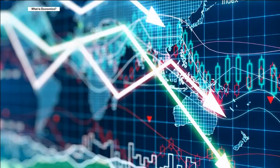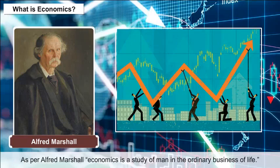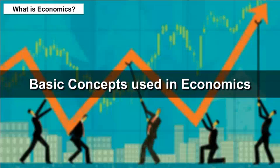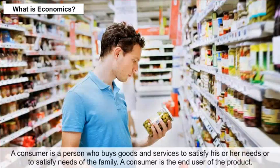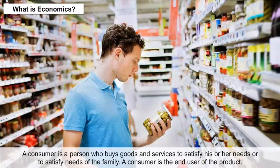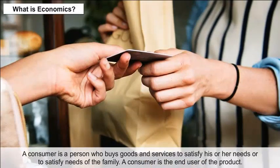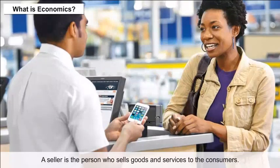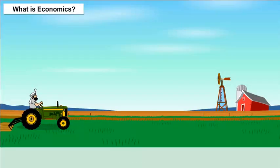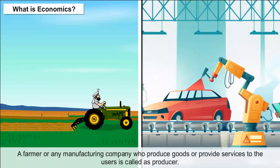Introduction: What is economics? As per Alfred Marshall, economics is a study of man in the ordinary business of life. Basic concepts used in economics: A consumer is a person who buys goods and services to satisfy his or her needs, or to satisfy needs of the family — a consumer is the end user of the product. A seller is the person who sells goods and services to the consumers. A farmer or any manufacturing company who produces goods or provides services to the users is called a producer.